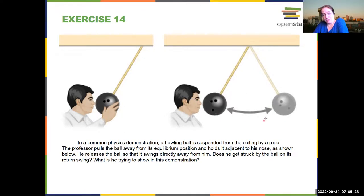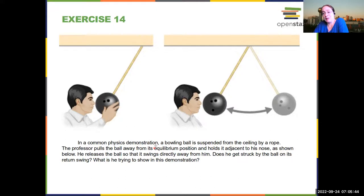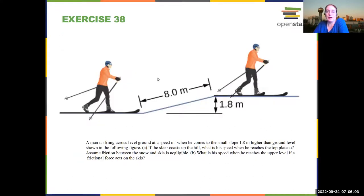If a student goes and pushes it at the bottom so it speeds up, all bets are off — then it could reach the professor. But what this shows is that you're just converting energy between potential and kinetic, and you never get enough energy unless some vengeful student pushes it. You're not going to get enough energy to actually hit the professor in the face.